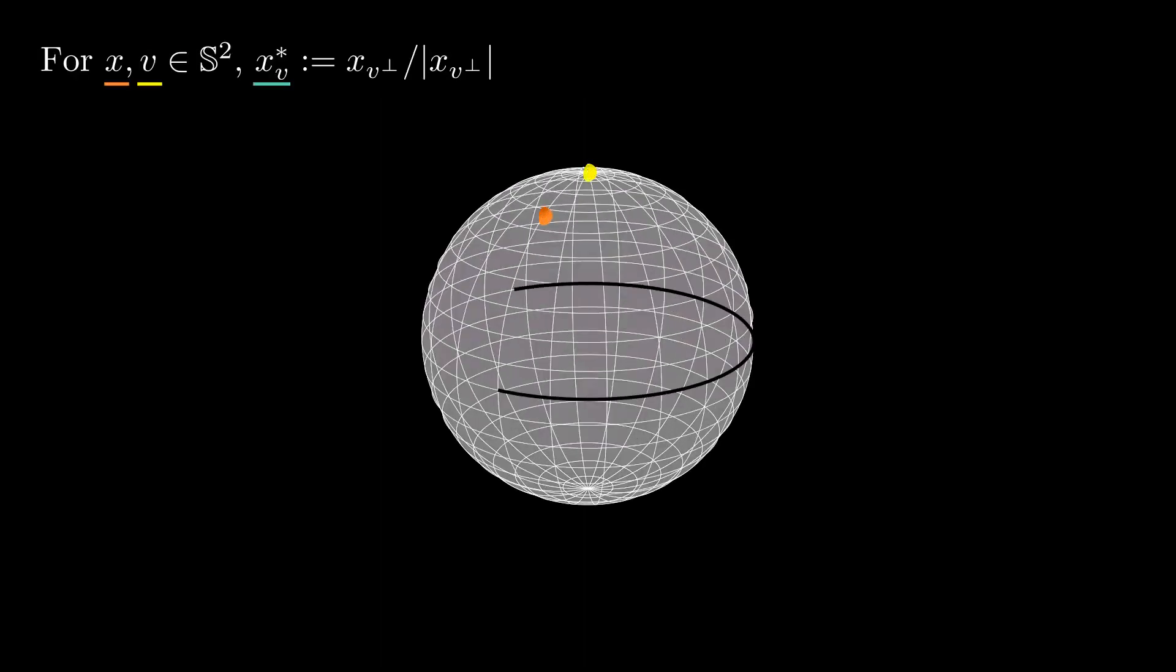Another cool property of spherical curves is that they have their own Crofton formulas. Note that for two vectors x and v in the unit sphere, we can project x into the equator perpendicular to v. We denote this projection as xv asterisk, and is obtained by taking the component of x perpendicular to v and then renormalizing. Of course, this will not be defined when x is either v or minus v.